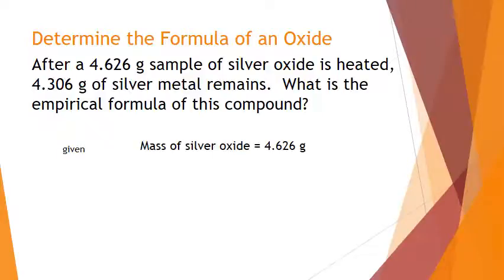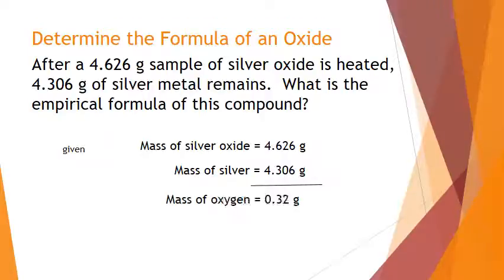But let's just see what we've got here. So we've got our mass of silver oxide, that's right from the question, and we've got our mass of silver. So if we subtract these off, we should be able to figure out that we have 0.32 grams of oxygen.